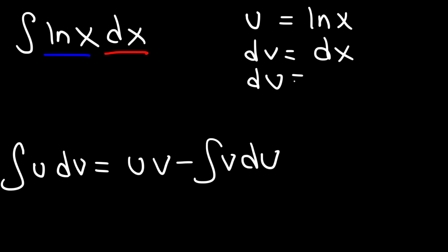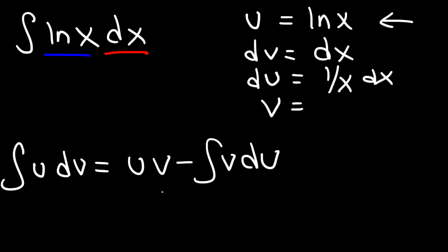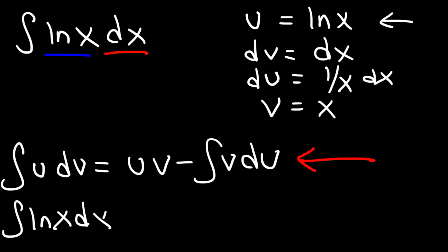Now we need to find du. The derivative of ln(x) is going to be 1 over x times dx. Now v is going to be the integral of dx. So if dv is dx, v has to be equal to x. Now let's apply the formula. So the integral of ln(x) dx is going to be u times v. We can see that u is ln(x), v is x, so u times v is going to be x ln(x).